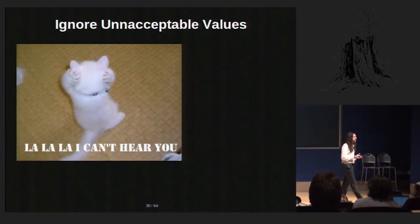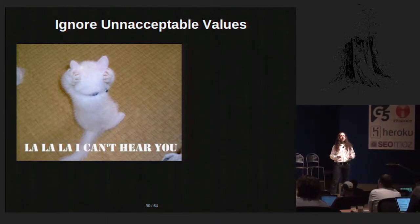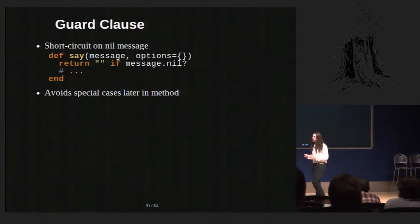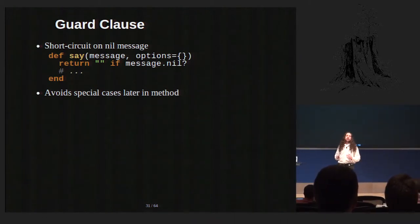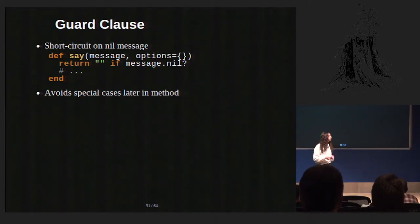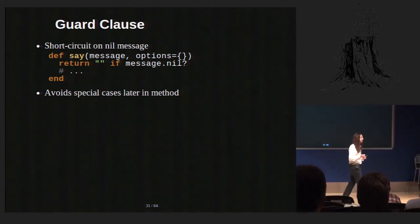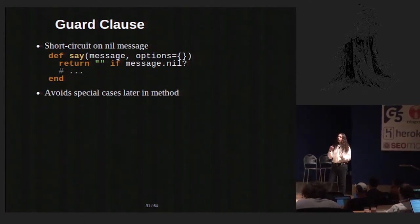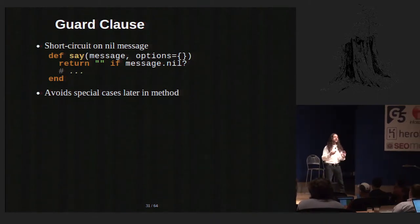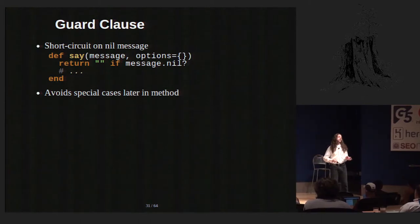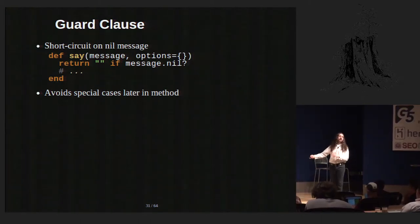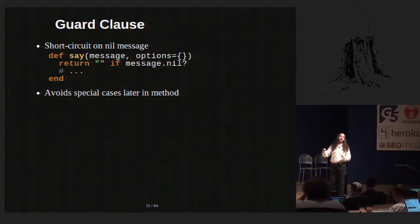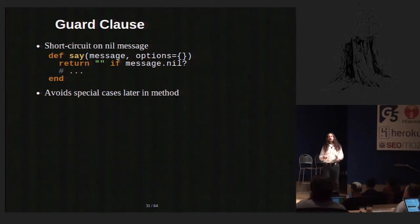The third way to deal with unacceptable values is to simply ignore them. One way to do this is with a guard clause. The guard clause is very similar to a precondition, except it doesn't raise an exception — it simply exits the method early. We've got this guard clause at the top of the method that says if the message is nil, we can't do anything with that. If we let it go, we'd have to keep putting special cases further down the method that are checking for nil. So we put this at the top level of our API, we don't let it go any further, we just return an empty string.